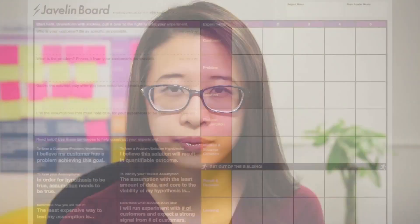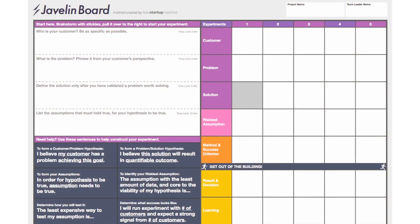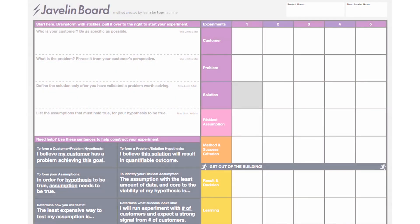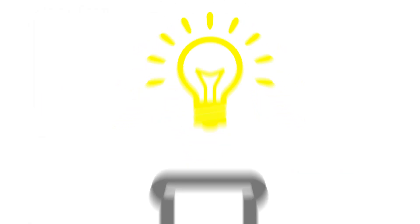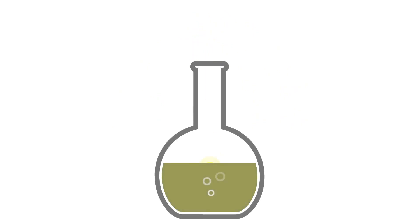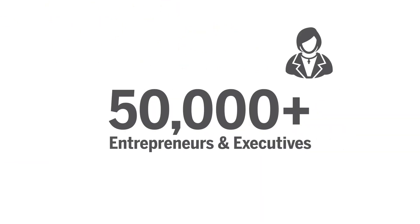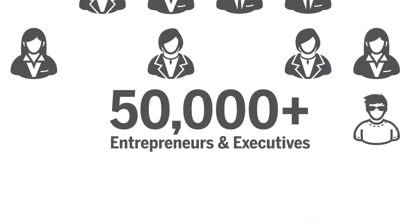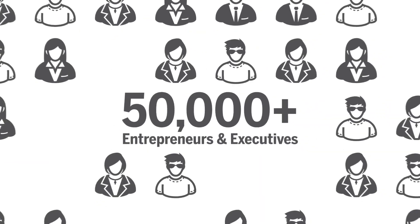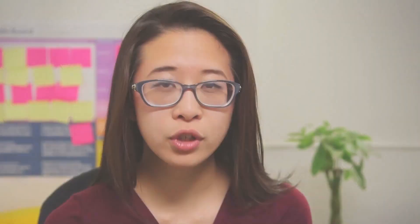We're here to help you avoid the same mistakes. The Javelin Board is a tool to help you turn your ideas into experiments. It was developed based on our training of over 50,000 entrepreneurs and innovation executives around the world. It is our improved version of the Validation Board — ten times easier to use and ten times easier to get started with.